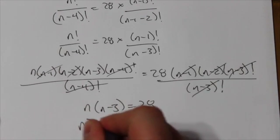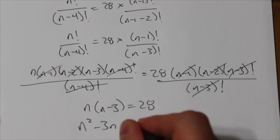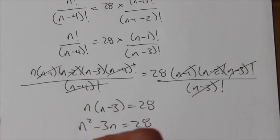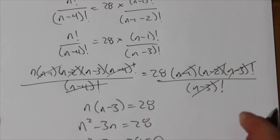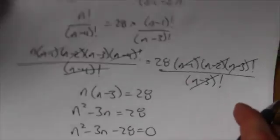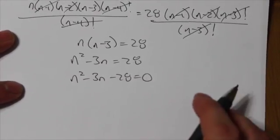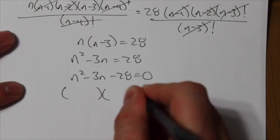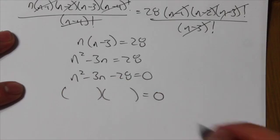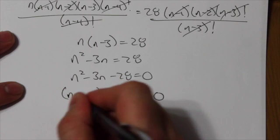Now, if you don't see that, then you expand that out, bring the 28 over. And this becomes a quadratic, so a Math 20 question. And I end up asking the same question. What are the two factors of 28 that differ by 3?